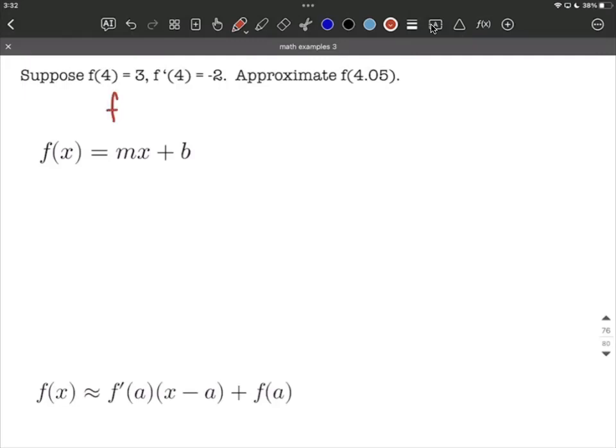So the first information let's start with is f prime of 4 equals negative 2. One critical piece of information about derivatives is derivatives tend to mean the slope of tangent lines. So whenever you see derivative, be thinking slope.